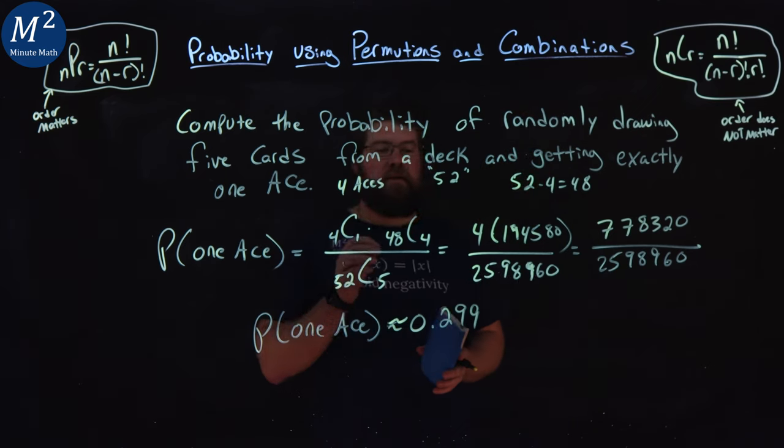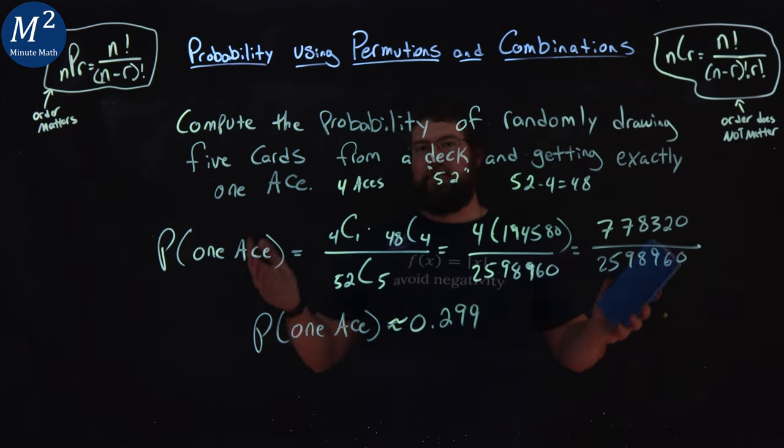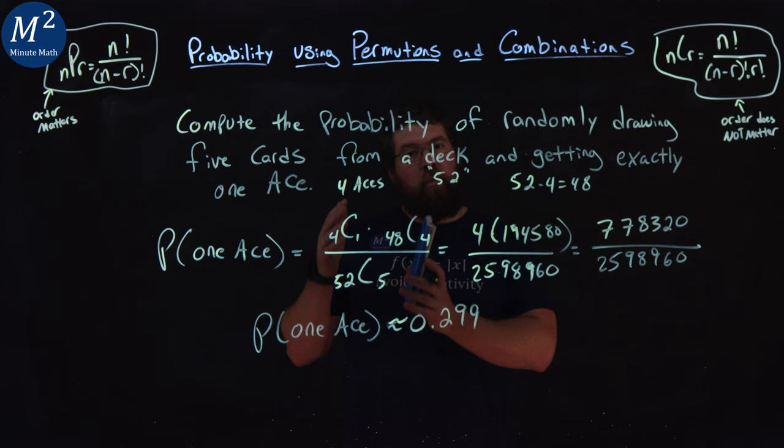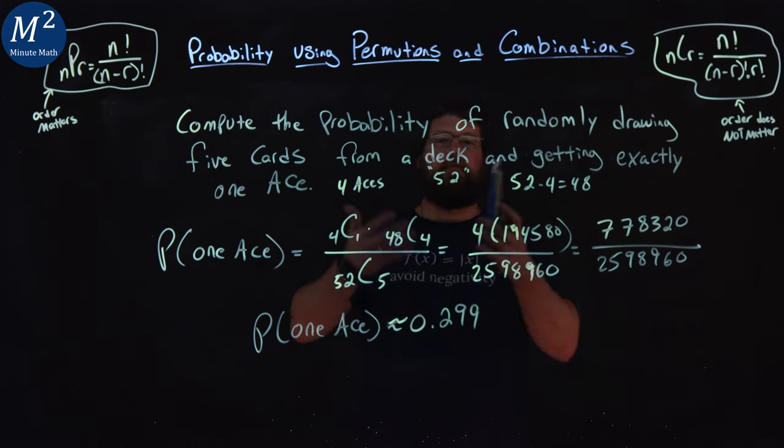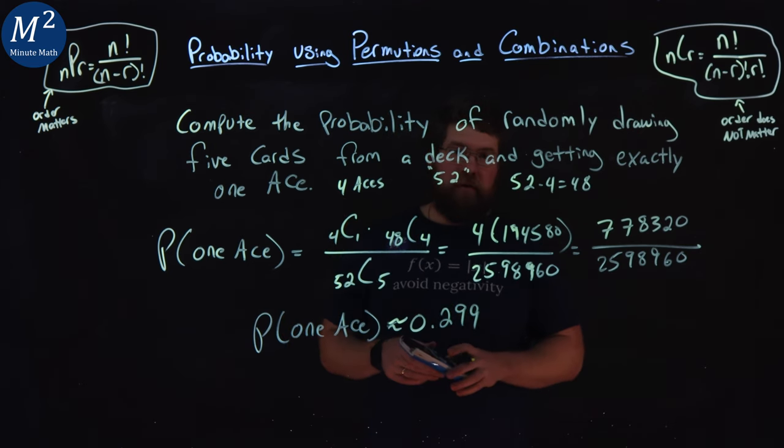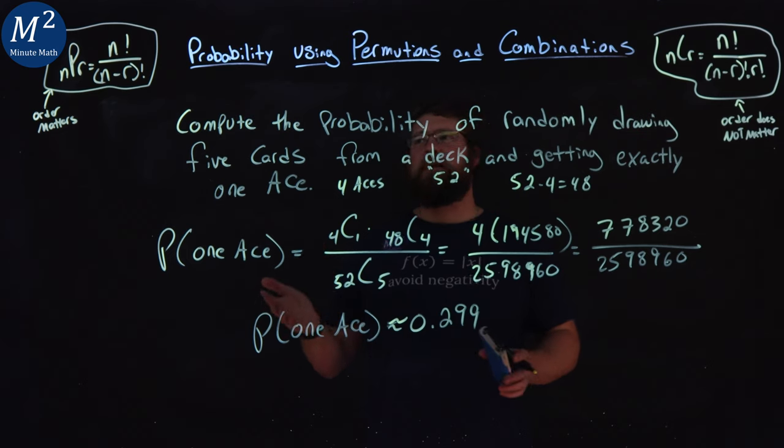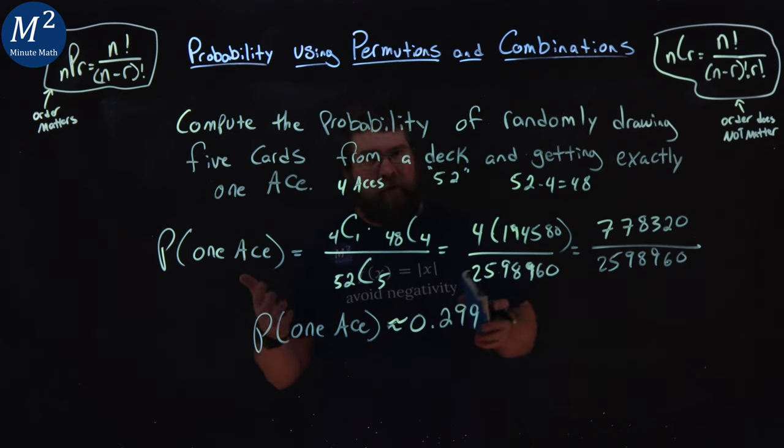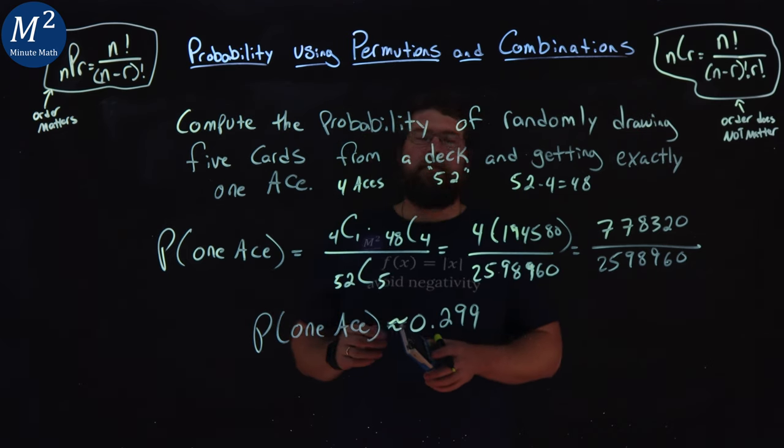So there's a 0.299 chance that you will have only one ace if you randomly grab from a deck of cards. I hope you learned something here about probability with a deck of cards. And as always, thanks for watching.